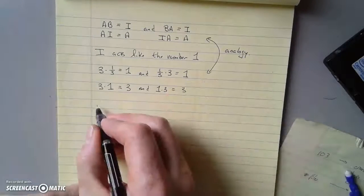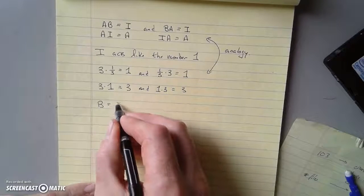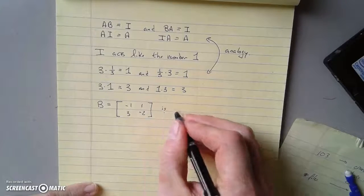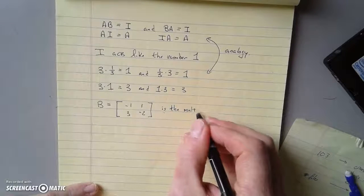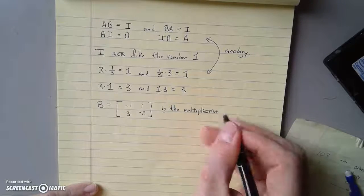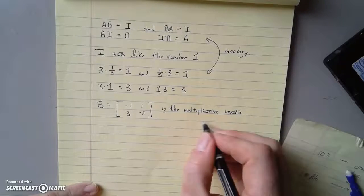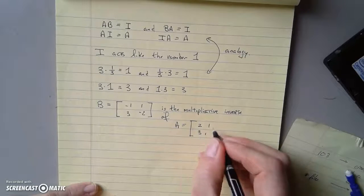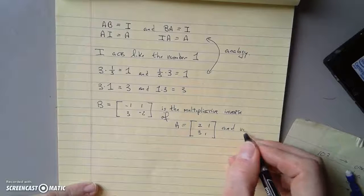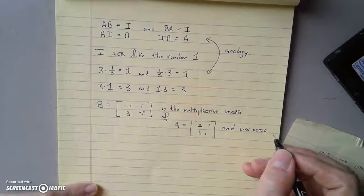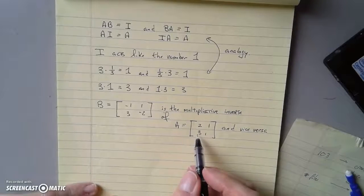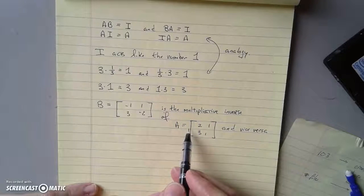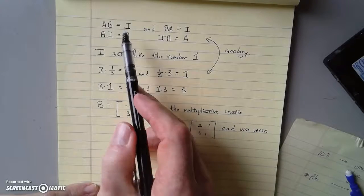So the extra bit we get here is that B, which was equal to negative 1, 1, 3, negative 2, is the multiplicative inverse of A, which was 2, 1, 3, 1, and vice versa. These matrices are inverses in the same way that 1/3 is the inverse of 3. If you multiply these two things together, it doesn't matter what order you do it in, you get the matrix equivalent of the number 1.